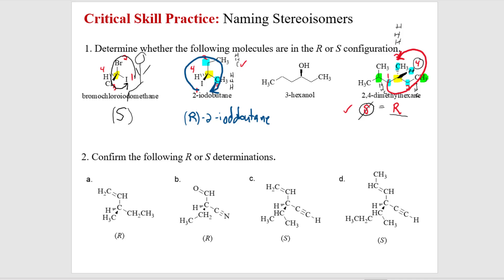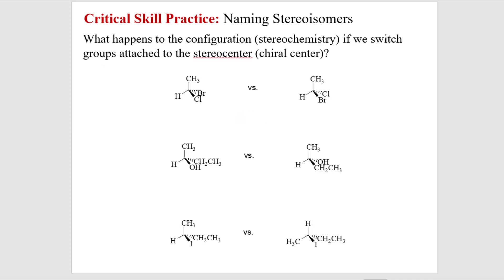This is a cheat so you don't have to try orienting the hydrogen by flipping the molecule — you might just make mistakes. It's easier to write yourself a note saying you've got to do the opposite of what you determine. I'll leave the bottom examples for you to practice on your own, along with a little more naming practice on the last slide.